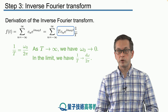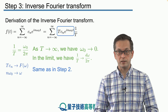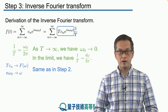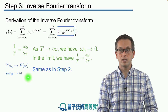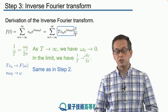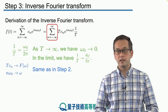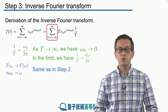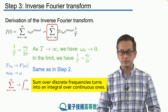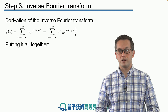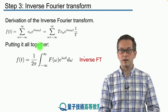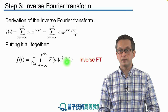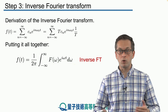Next we look at the product inside the blue box. Following what we said in step 2, the product of the period T times cₙ we call capital F(ω). The product n times ω₀, as T goes to infinity, becomes a continuous variable which we call ω. And finally the sum, which in the Fourier series ranges from n equals minus infinity to infinity, goes into an integral from minus infinity to infinity. Putting all of this together, f(t) is given by 1 over 2π times the integral from minus infinity to infinity of F(ω) times e^(iωt) integrated over the whole range of frequencies.